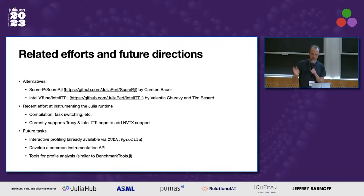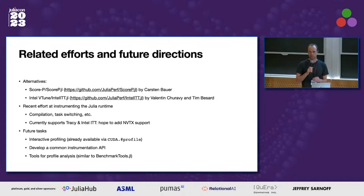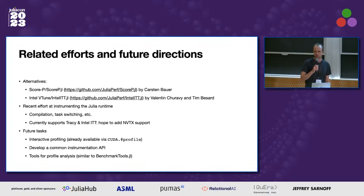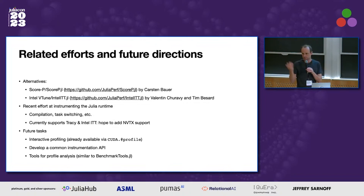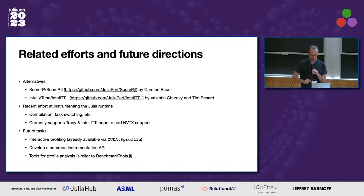There are other related efforts and parallel profilers out there. ScoreP.jl by Karsten interfaces with ScoreP, which is a very similar MPI-type profiler. And there's Intel's ITT API — Intel's instrumentation for the VTune profiler — which Valentin and Tim have done a fair bit of work wrapping as well. There's also been a lot of recent effort on instrumenting the Julia runtime itself, separate from the GC hook I mentioned. Currently Tracy and Intel's ITT support that, and we've had discussions about building a generic interface so we could also profile the rest of the Julia runtime.